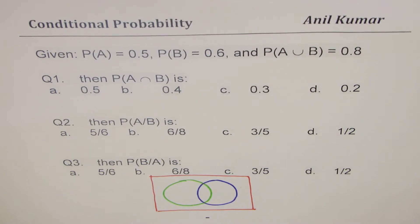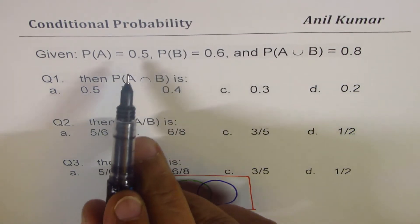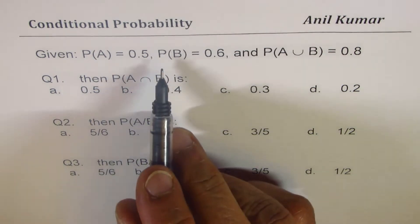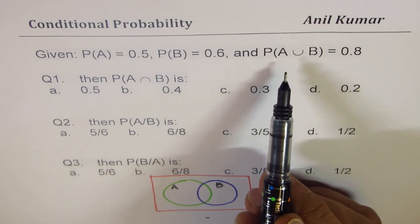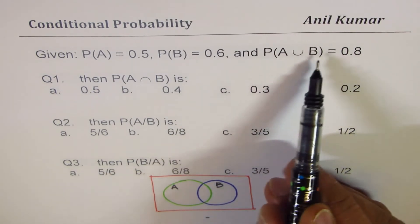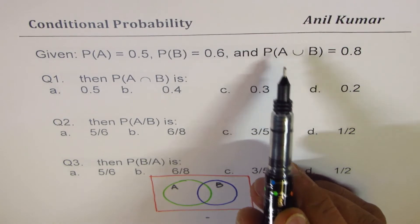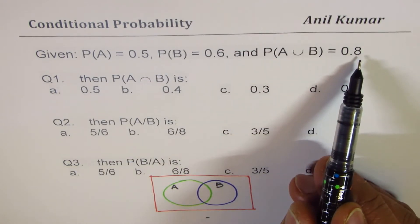So we are saying that probability of event A, which is let's say this event A, is 0.5. Probability of event B, which is that event, is 0.6, and their union, that means A or B, is 0.8.